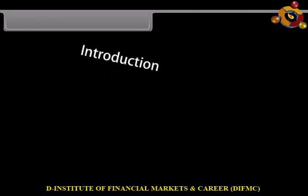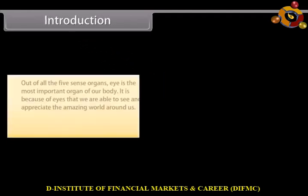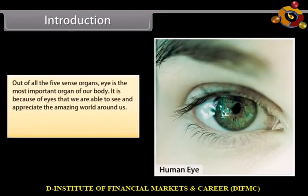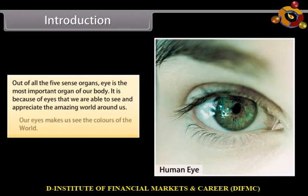Out of all the five sense organs, the eye is the most important organ of our body. It is because of eyes that we are able to see and appreciate the amazing world around us. Our eyes make us see the colors of the world.